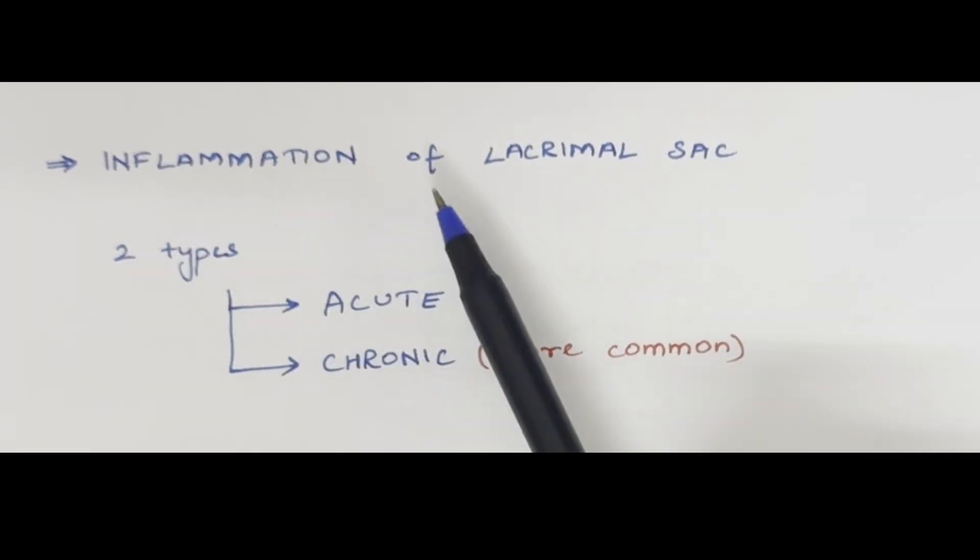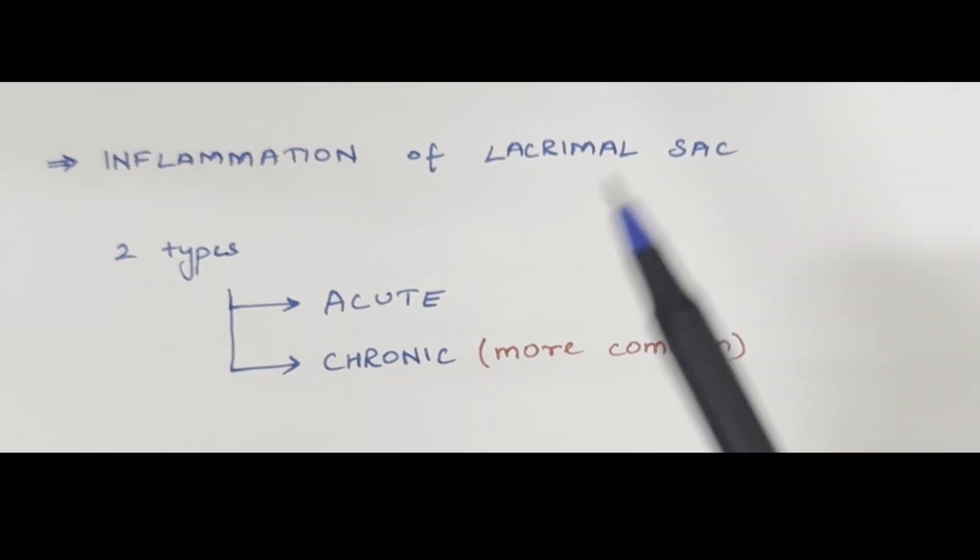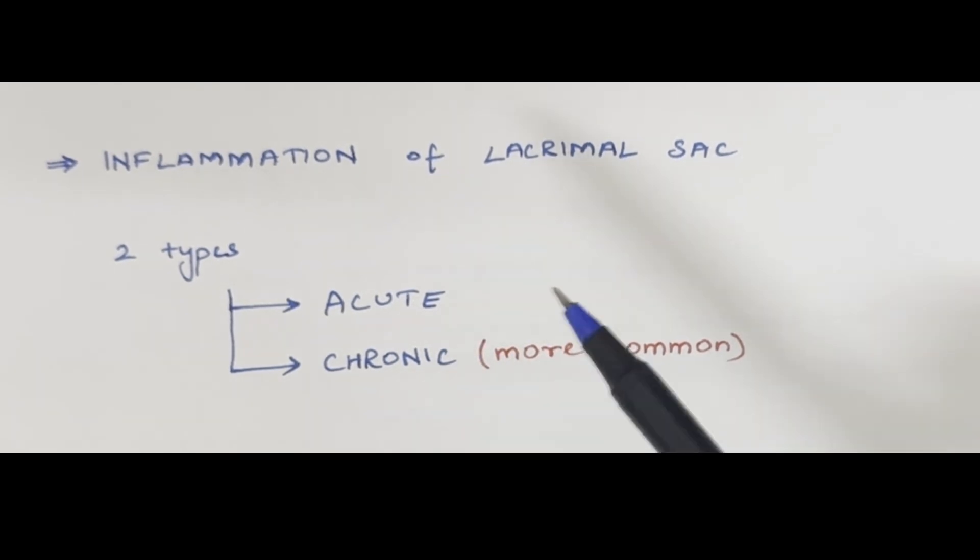Dacryocystitis is the inflammation of the lacrimal sac. There are two types of dacryocystitis: acute dacryocystitis and chronic dacryocystitis. First we will see chronic dacryocystitis since it is more common than acute.